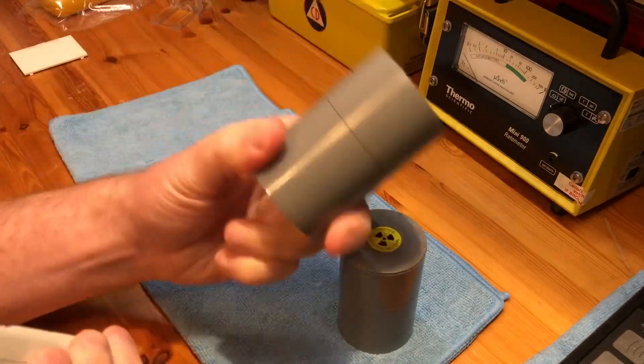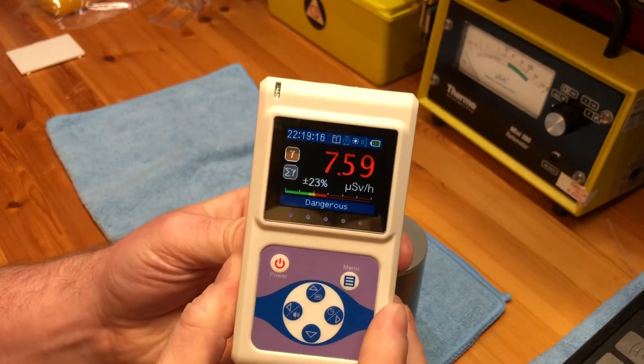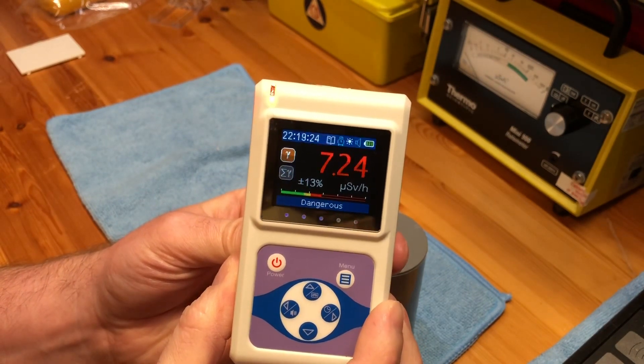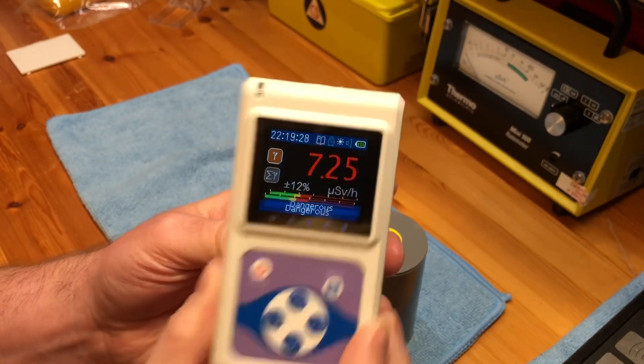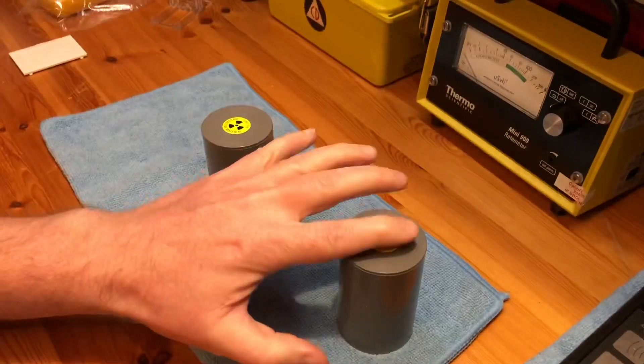And then this is the radium dial. So the radium dial as I said is about 9 millisieverts, and that has brought that down to let's say 7 microsieverts. So that's awesome. Really awesome.